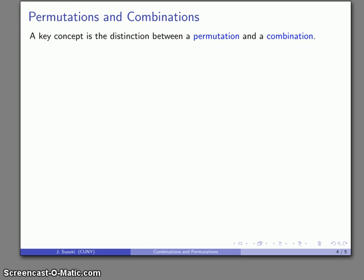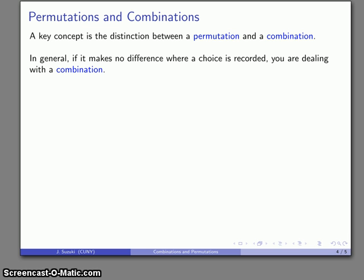An important concept is the distinction in mathematics between what is a permutation and what is a combination. The two are very easy to get confused, and it's important to make sure that we know which one we're dealing with. In general, one way to tell is that if it makes no difference where we record a choice, then you're dealing with a combination.